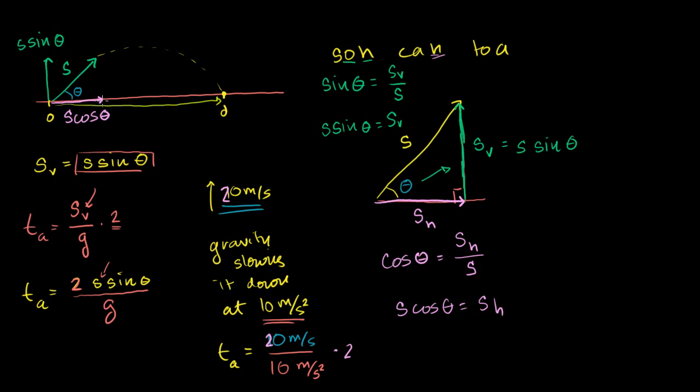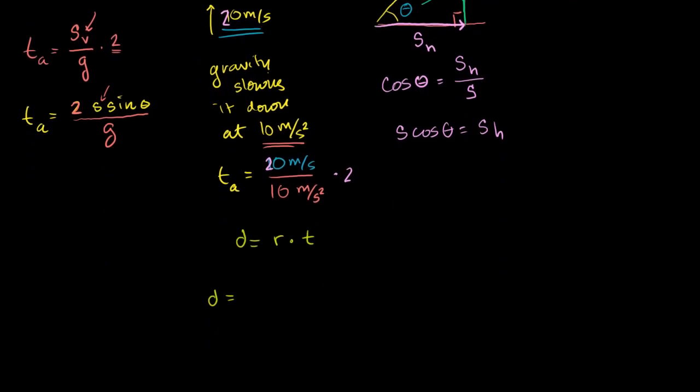And we figured that out in the first video. That is s cosine of theta. So let's write that down right here. So our rate is s cosine of theta.